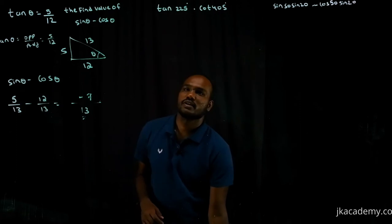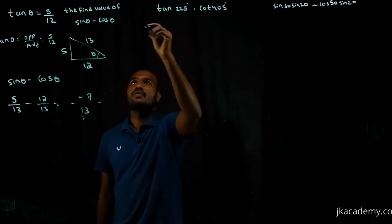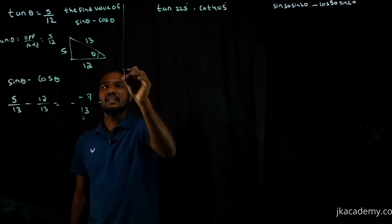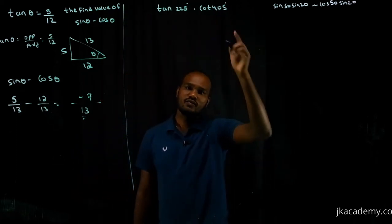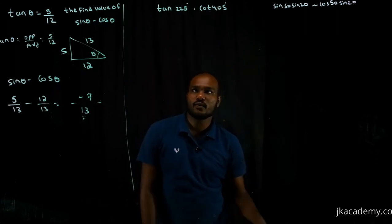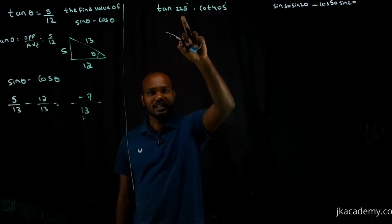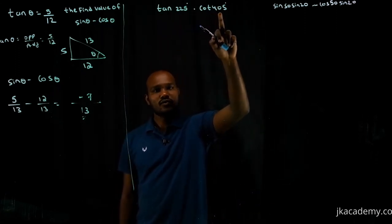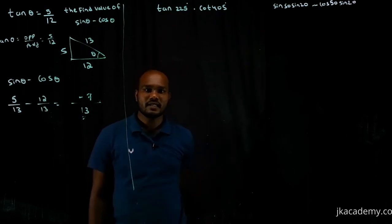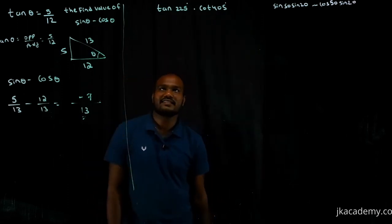Let's go to the next question. What is tan(225°) multiplied by cot(405°)? Let's see how to solve this.